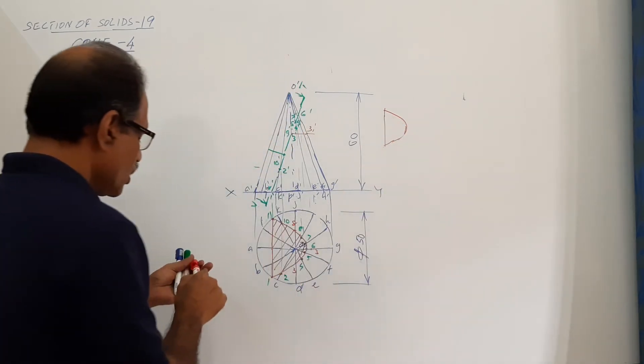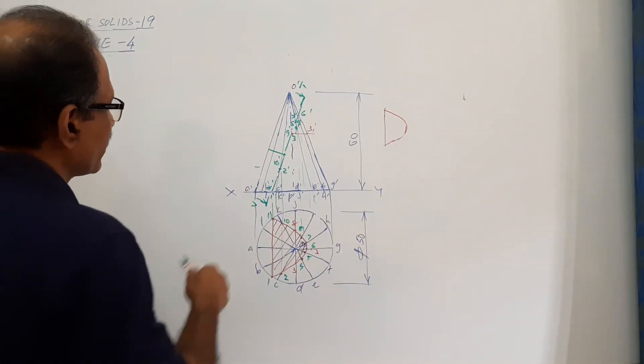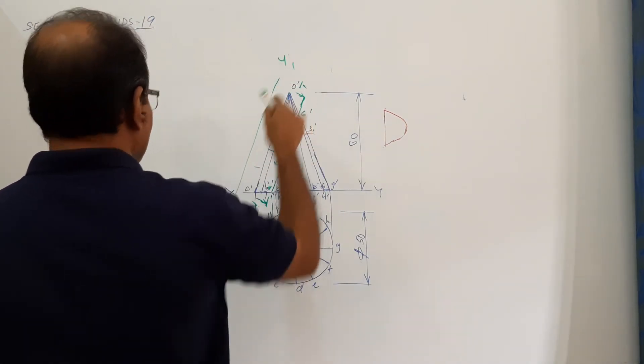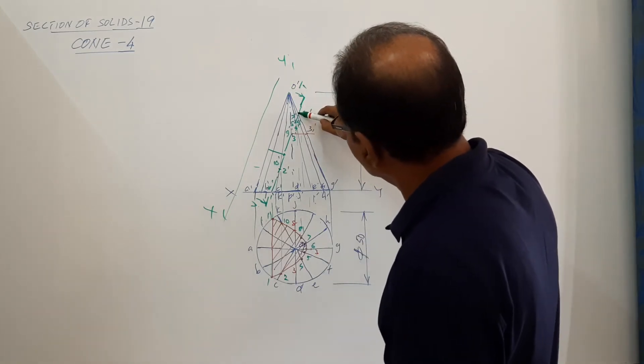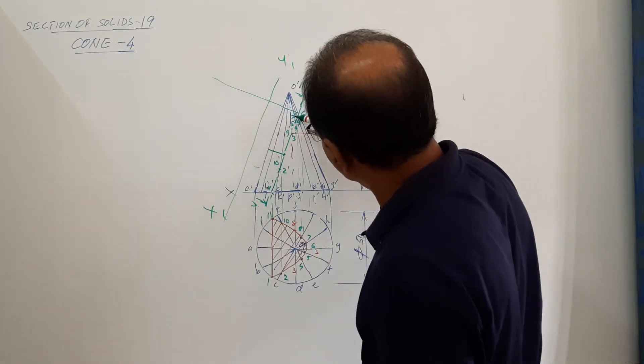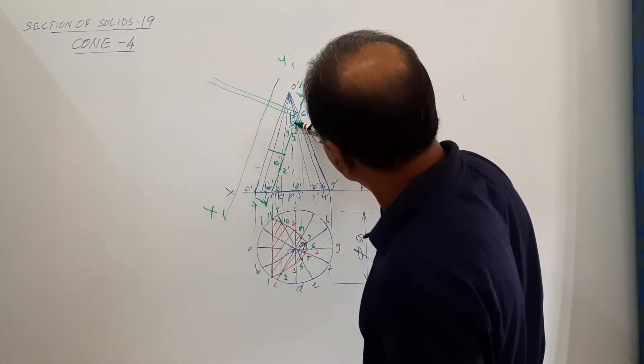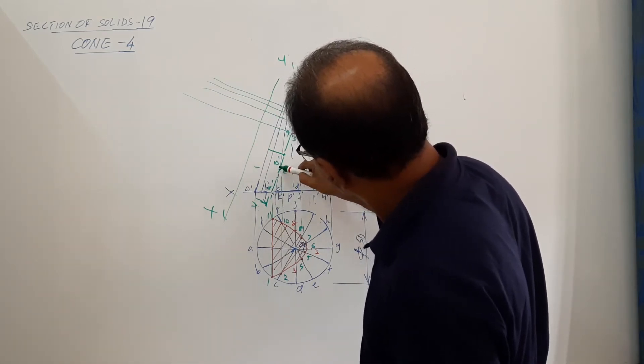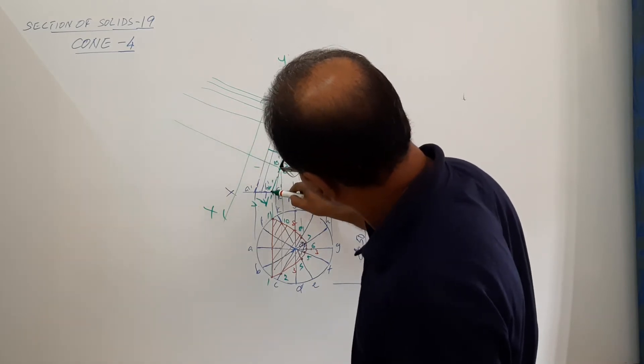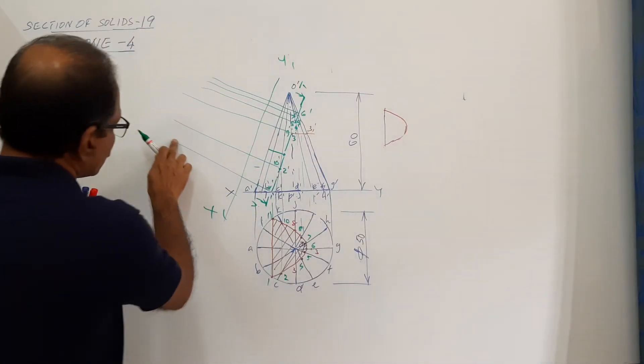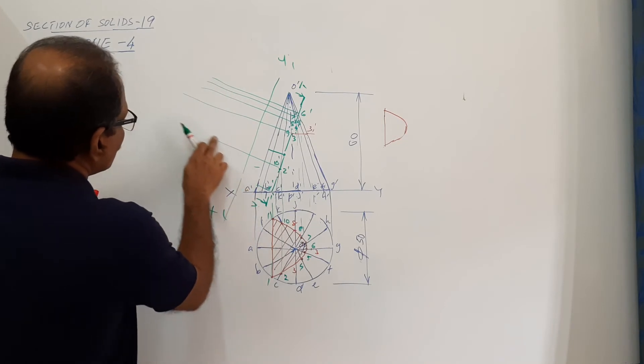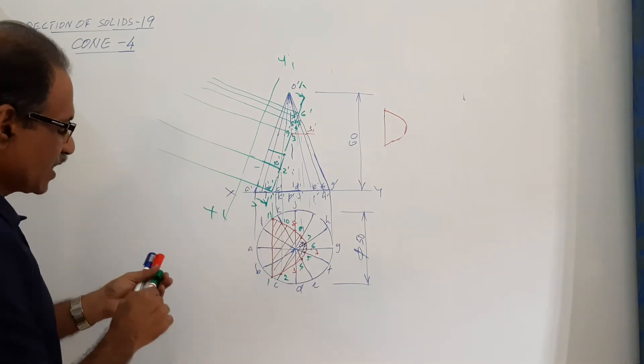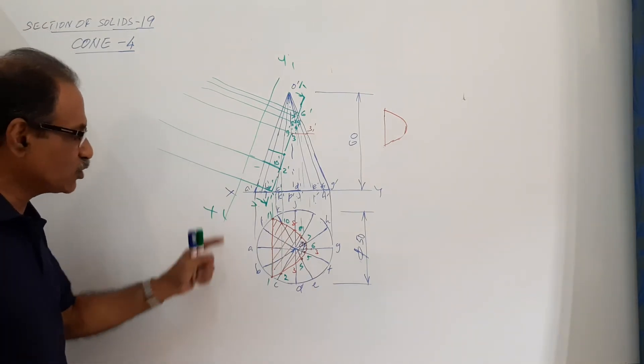Now parallel to the cutting plane, draw X one by one, and draw projectors through all points perpendicular to X one by one. So these two are not perpendicular.